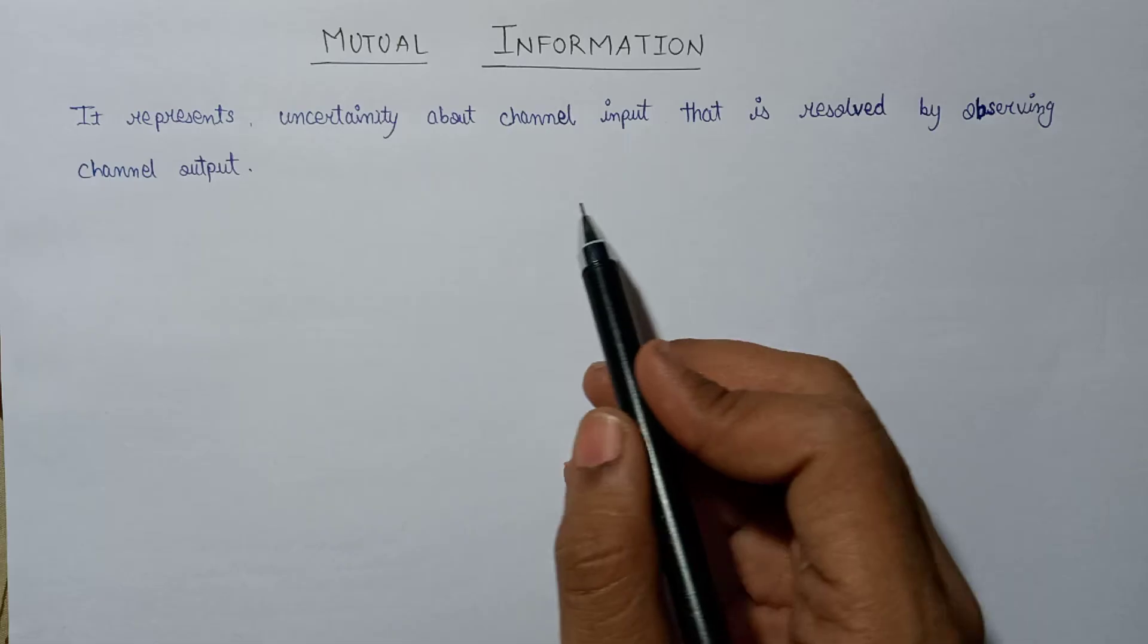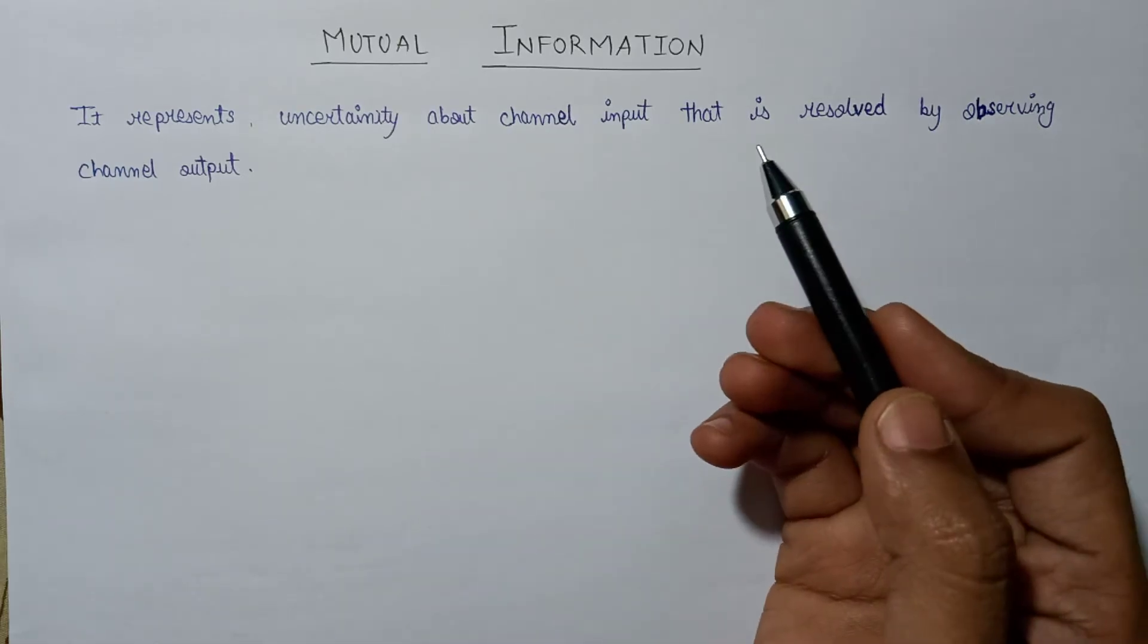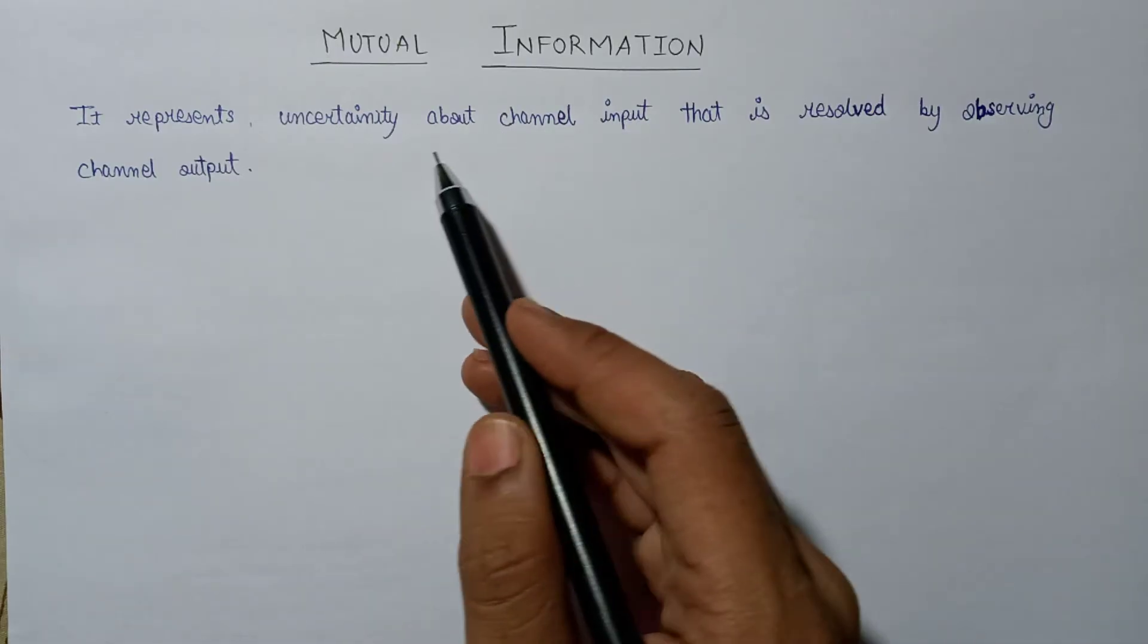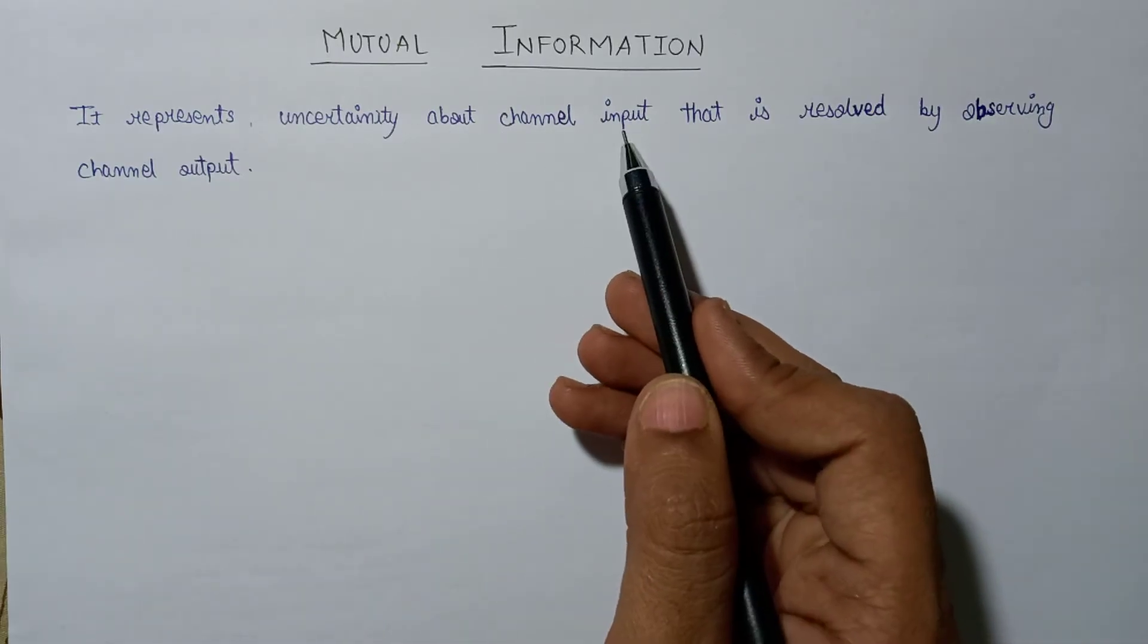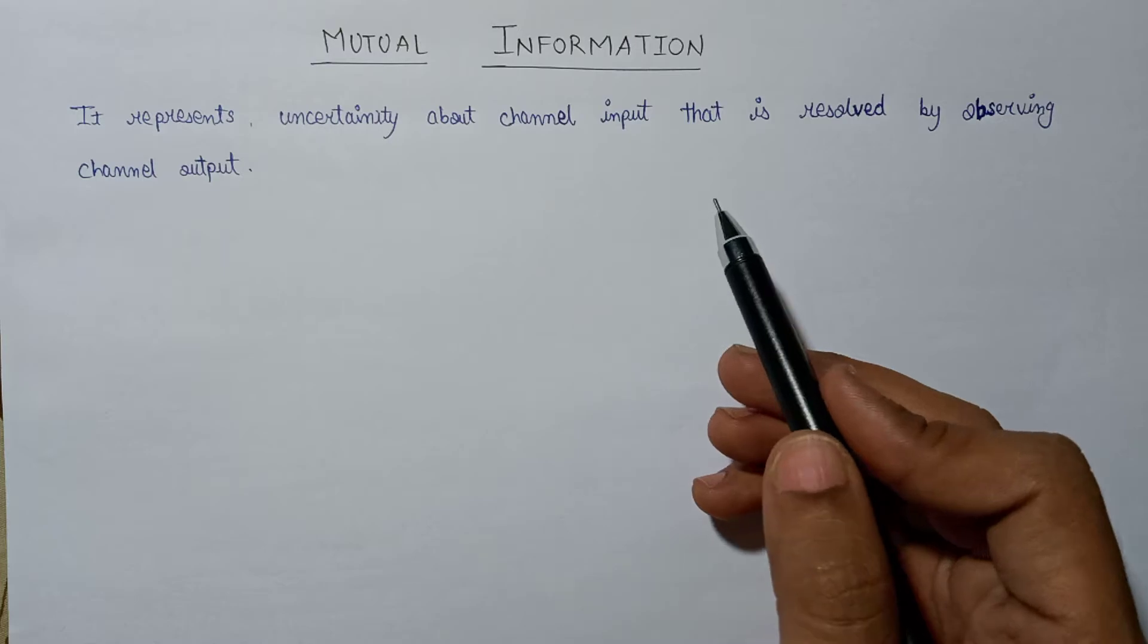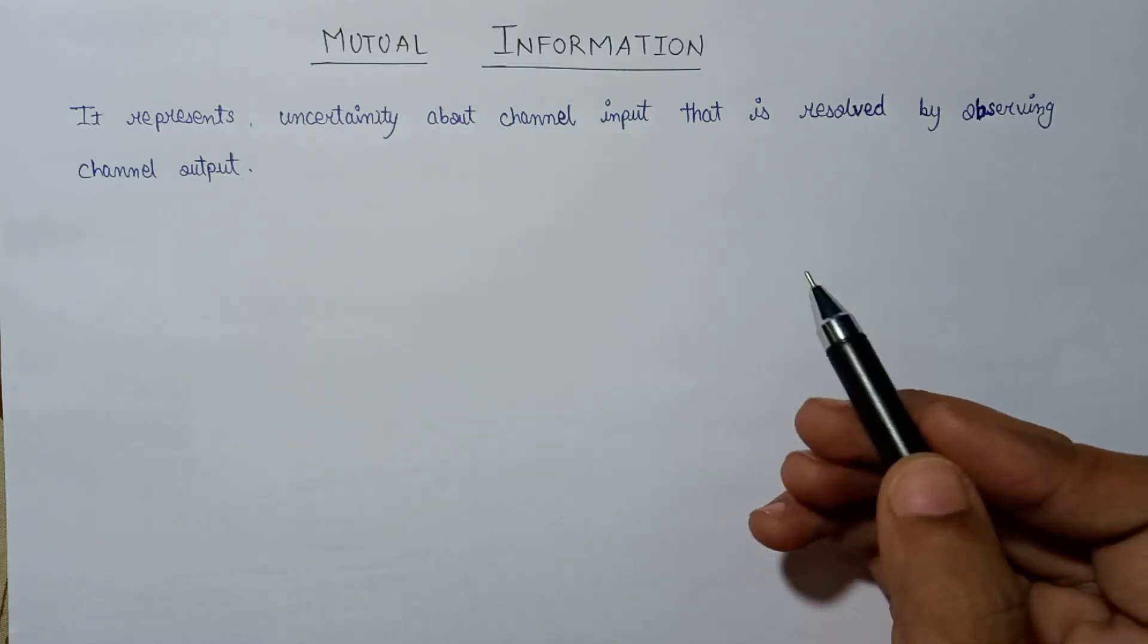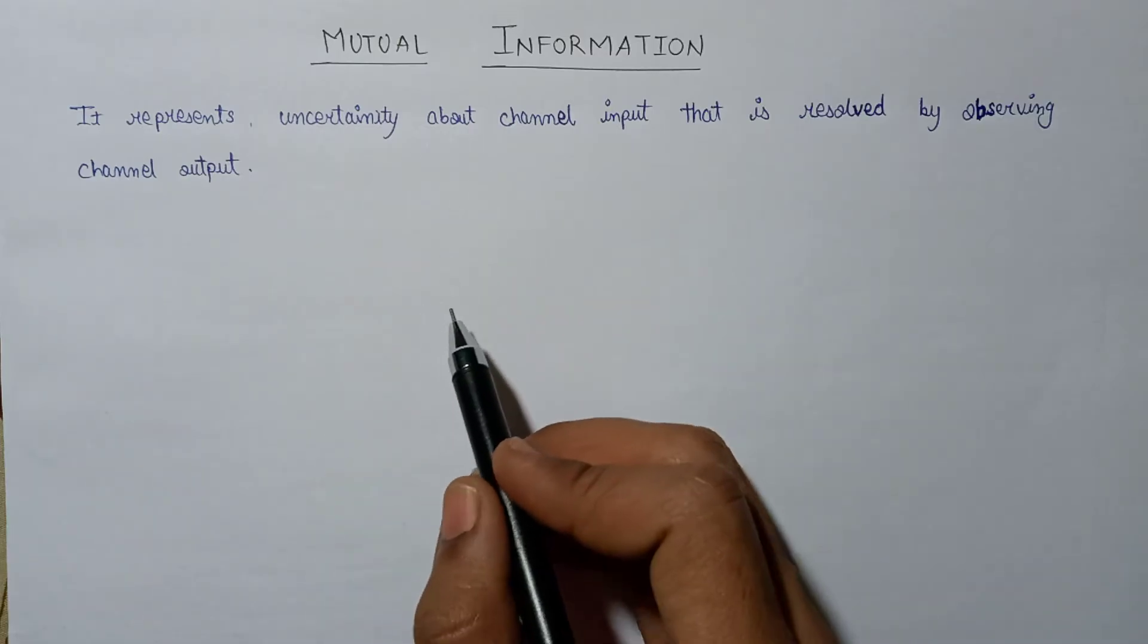If we have any channel, then it will have two ports: the input port and the output port. Now the mutual information represents the uncertainty about channel input that can easily be resolved by observing its output. So that's the concept about mutual information.